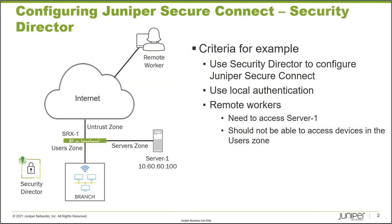Here is our example topology. We have SRX1, which we will be configuring using Security Director. SRX1 is connected to the users in the branch via the users zone, and we have server1 connected through the servers zone. The internet connects to SRX1 using the untrust zone. We have a remote worker who needs access to server1, and we want to use Security Director to configure Juniper Secure Connect with local authentication.